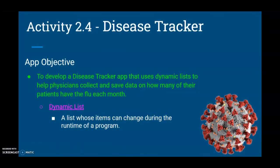Today we're going to take a look at activity 2.4, our disease tracker app. Our app objective is to help develop a disease tracking app that uses dynamic lists to help physicians collect and save data on how many of their patients have the flu for each month. In our previous activity we looked at static lists, which are lists that contain preset data stored into the program.